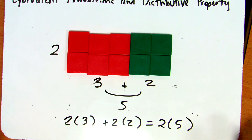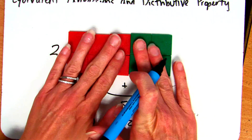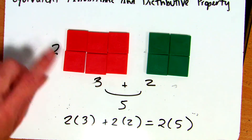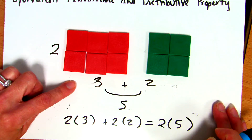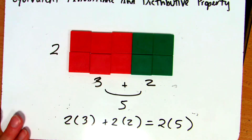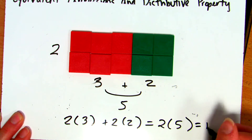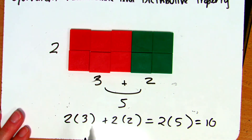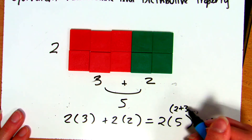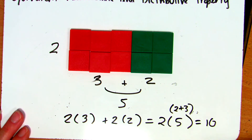Let's talk about how this relates to the area of a rectangle. Initially we had two smaller rectangles: one with dimensions 2 by 3 and another with dimensions 2 by 2, giving areas of 6 and 4. We put them together to get a rectangle with an area of 10, because 2 times 5 equals 10. In a nutshell, this is the distributive property: 2 times 3 plus 2 times 2 is the same as 2 times 5, because 5 is just 2 plus 3.